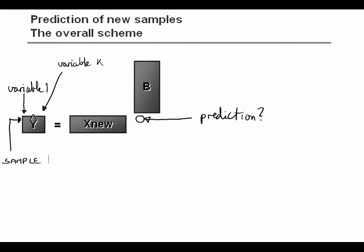So how can we predict a new sample? Well, that's from the regression coefficients. Let's say we have X new and we want to predict the first sample. That's the first row in X new and from that we want to predict the first Y variable. That's the first column in Y.